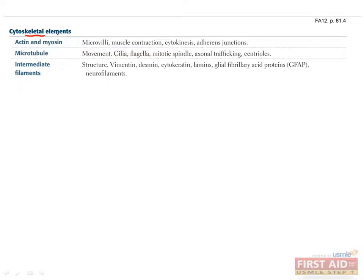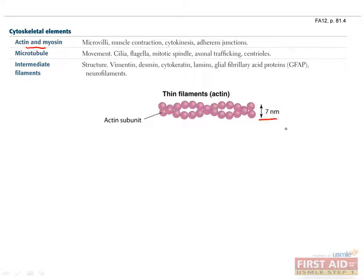There are three major parts to the cytoskeleton. Actin and myosin comprise microfilaments, and they are the thinnest structure in the cytoskeleton with a diameter of just 7 nm. Actin is present in microvilli and adherent structures, and actin and myosin together mediate muscle contractions and cytokinesis.